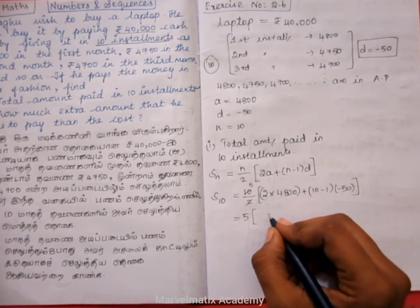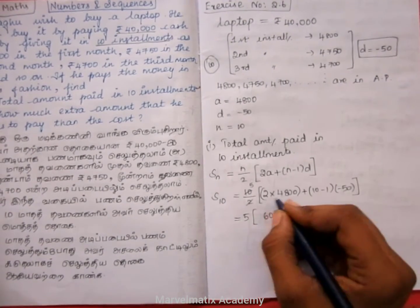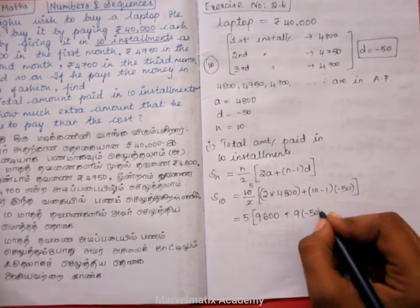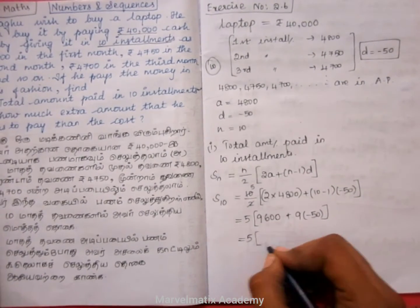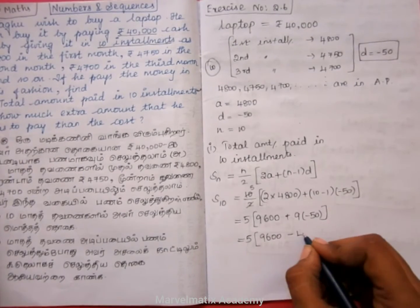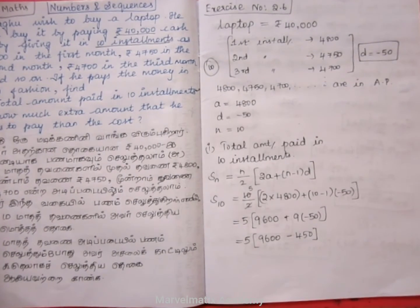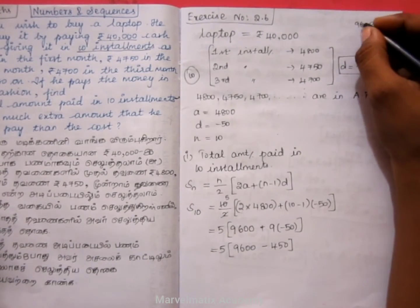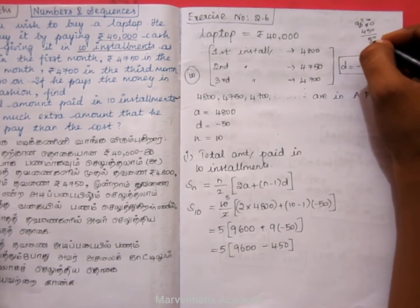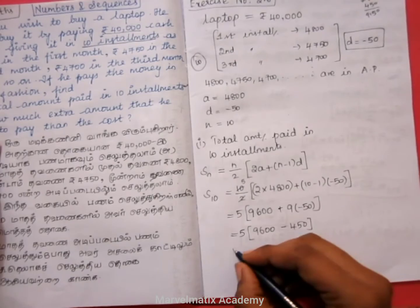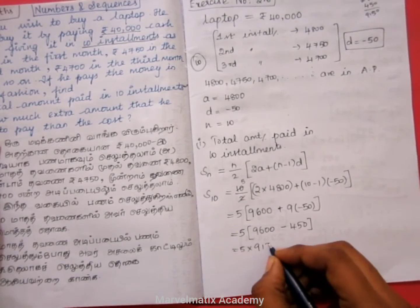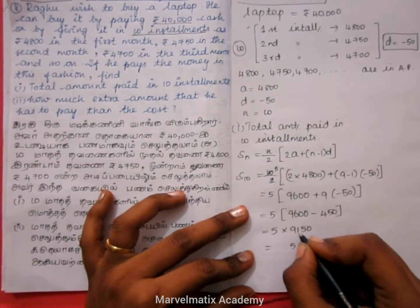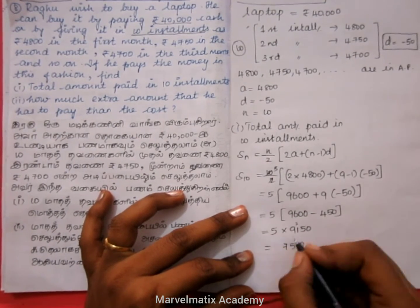So 5 into: 2 multiplied by 4,800 is 9,600. Plus 9 into minus 50 gives minus 450. So it is equal to 5 into 9,600 minus 450. That gives 5 into 9,150. Which equals 45,750.